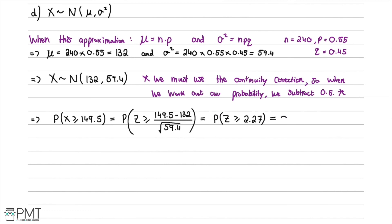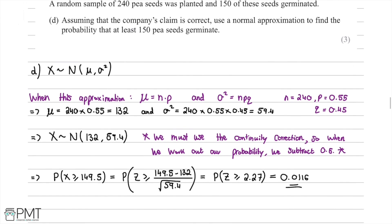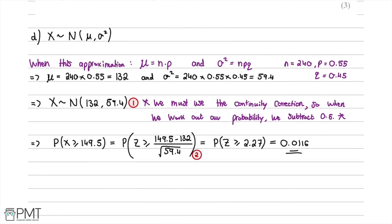Using our calculator or a normal distribution table, the answer is 0.0116 to three significant figures. We've completed the calculation: the probability that at least 150 seeds germinate is 0.0116. This question was worth three marks — first for working out the distribution with mean and variance, second for correctly using z-scores, and third for the correct final answer of 0.0116.